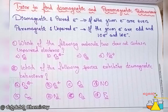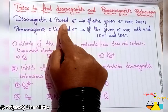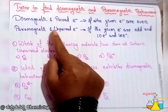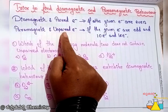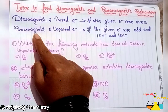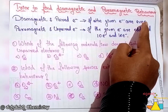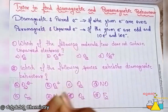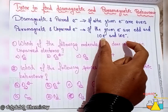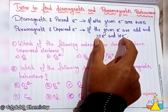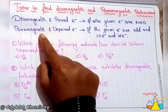Even electron count means diamagnetic. Odd electron count means paramagnetic. But in an exceptional case, 10 and 16 electrons are considered even numbers, yet they are treated as paramagnetic in nature.